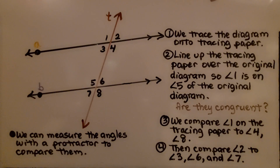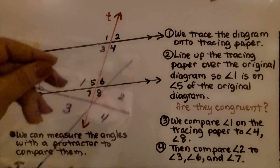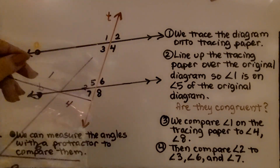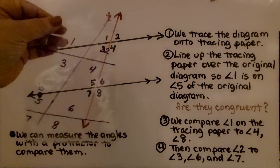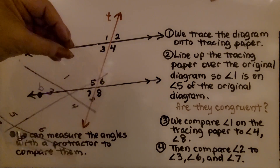Here we have our parallel lines and our transversal T. The first thing we do is trace the diagram onto tracing paper — I traced it onto some cellophane so that it'll stick to the board and we can see through it.